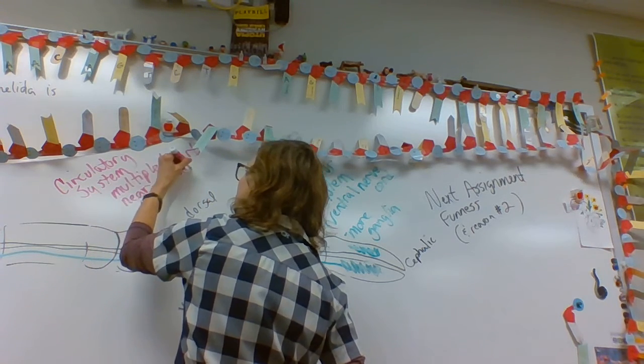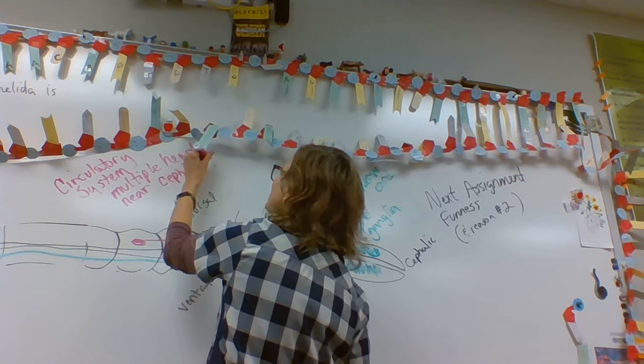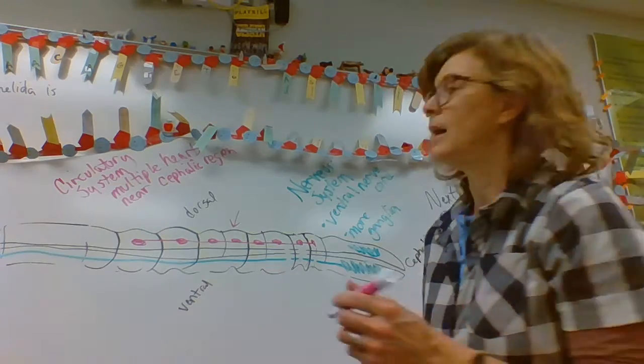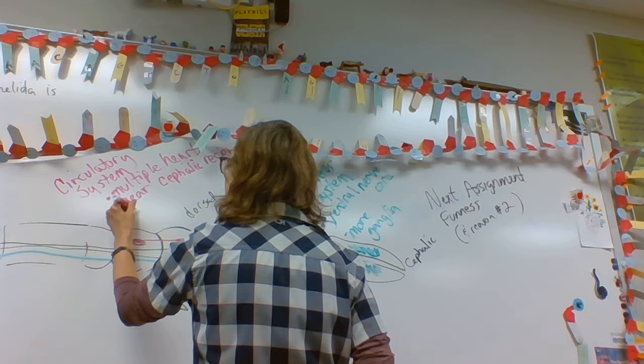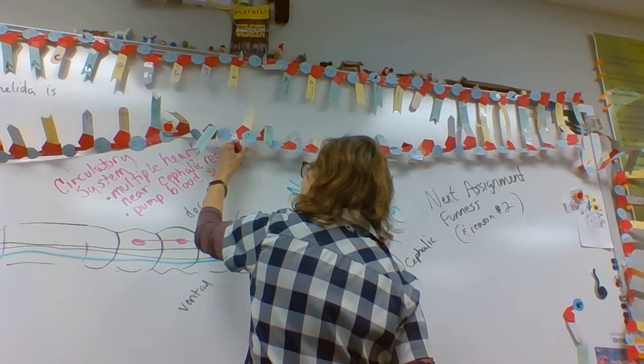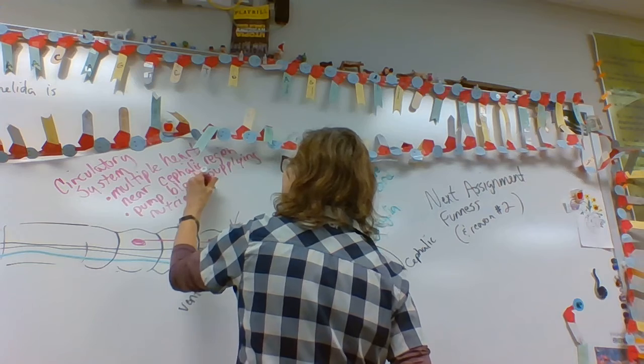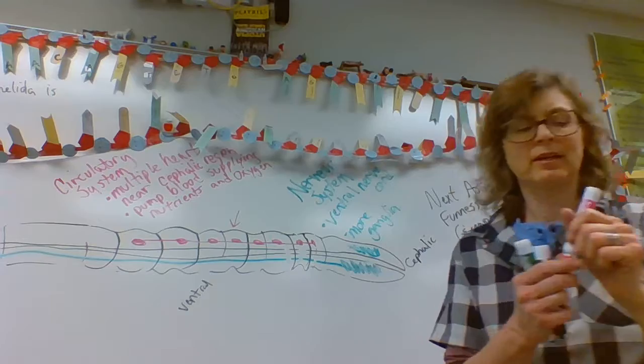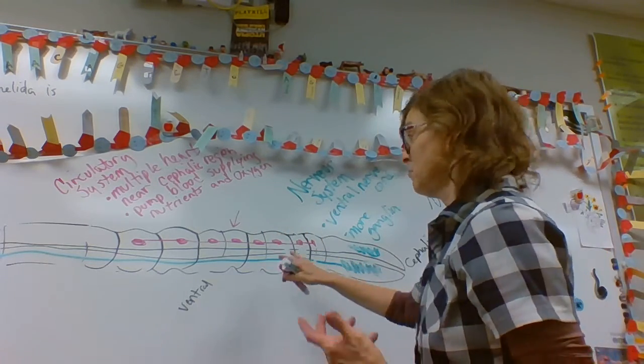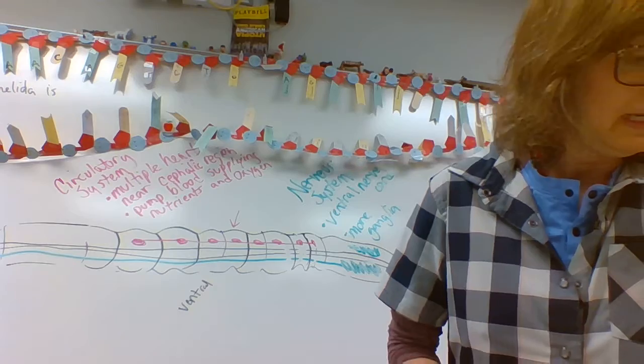Something to know about these segments is all the way down the beast, it's going to have segments. And some of the segments are taking on some specializations. For example, several segments in the front are going to have these thickened muscle areas along the circulatory system. And we could loosely call those hearts. So they aren't complex like our heart, but they are the most complex sort of a heart or aortic pump that we've seen yet. So that's to pump blood through the animal because it's a bigger animal. It's going to take some work to get the nutrients circulating. The hearts are located towards the cephalic region. And that makes sense because the ganglia are going to need to have lots of oxygen, lots of food supply. Multiple hearts near cephalic region pump blood supplying nutrients and oxygen.